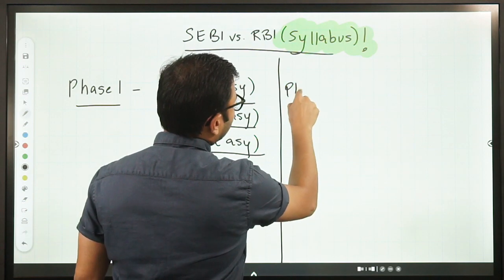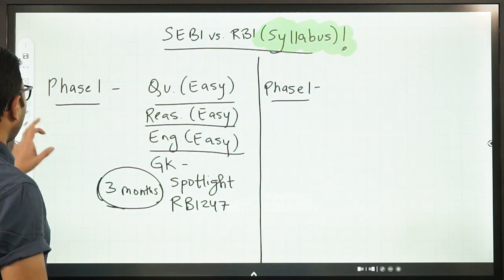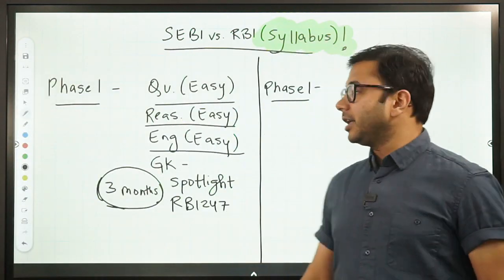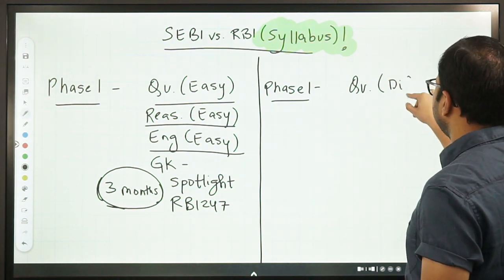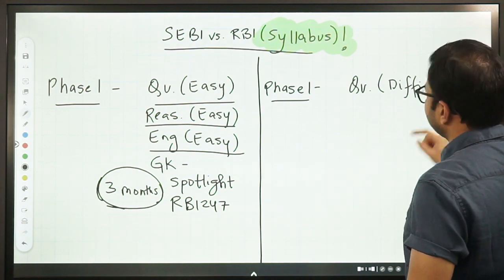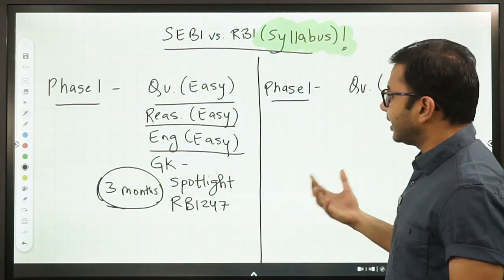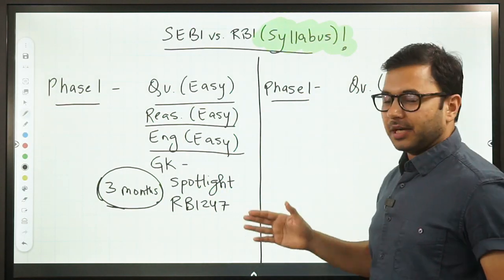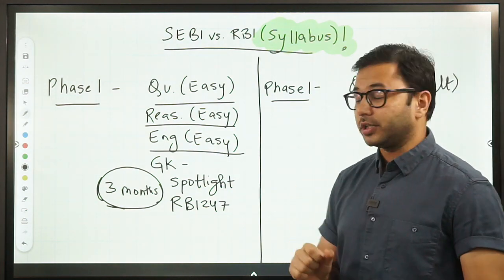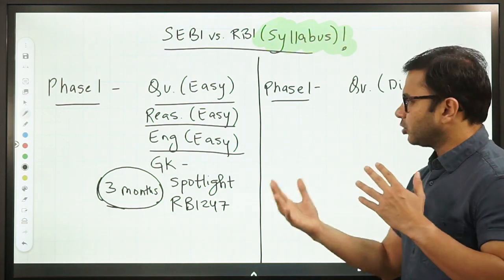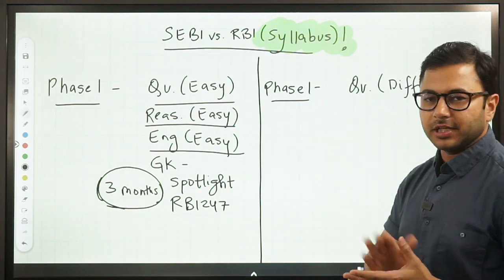Now, if we compare it with RBI phase one, you will see that the syllabus is exactly the same. We have quant, but here the difficulty level is very high. So, SEBI examination will give you a good start about quant, reasoning, and English. And you can build up upon these three subjects after you are done with SEBI if you decide to write these two exams together. You prepare according to the level of the exam.